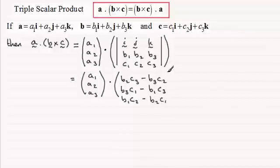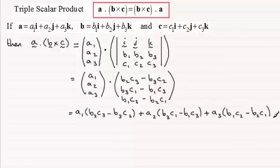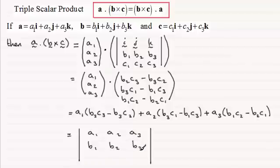And so when you dot these two together, you end up with this result here, which you should recognize as being equal to the determinant of A1, A2, A3. And then underneath this we would just have the vector components for B, which is B1, B2, B3, and then the vector components of C, which is C1, C2, C3.